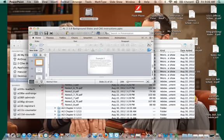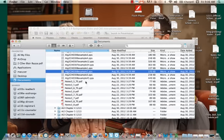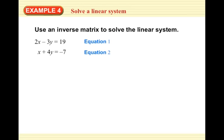Now, we're going to use an inverse matrix to solve linear systems. So let's go find those examples. Our first step is going to be to write the system as a matrix equation, AX equals B.